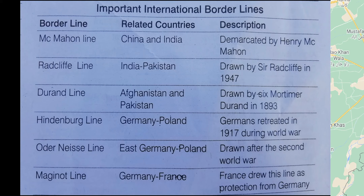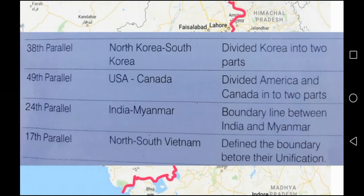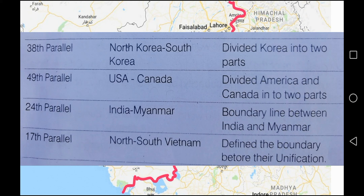The Oder-Neisse Line is between East Germany and Poland, drawn after the Second World War. The Maginot Line is between Germany and France; France drew the line as protection from Germany. The 38th Parallel divided Korea into two parts: North Korea and South Korea.